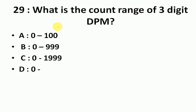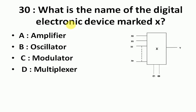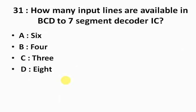What is the count range of 3-digit DPM? Answer is 0 to 999. What is the digital electronic device marked X? The answer is multiplexer. How many input lines are available in BCD to 7-segment decoder IC? Answer is 4.